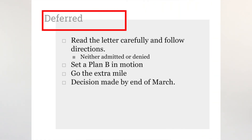If you are deferred, read the letter very carefully and follow the instructions that they have laid out for you. You were neither admitted nor denied — you are just kind of in limbo. They will ask for a lot of other information to see whether you will have a spot. This is kind of their waiting list, but it's called deferred. What you should do is review your safety and target schools — we did this list for a reason. You can also consider applying to other schools and start setting up Plan B. Add new information to your application file — grades, test scores, scholarships and awards you have received, recommendation letters, and community service. And go the extra mile: contact professors and let them know you really want to go there.